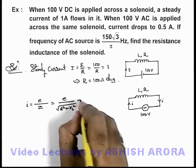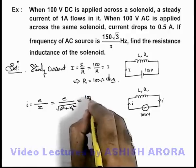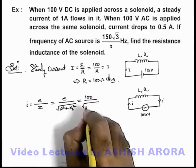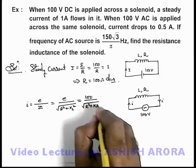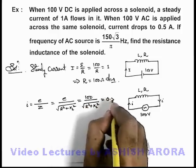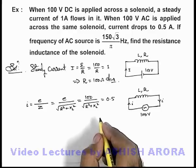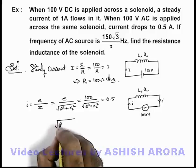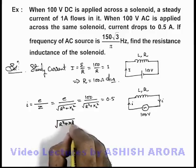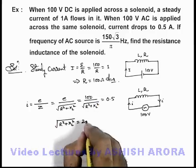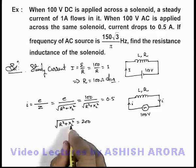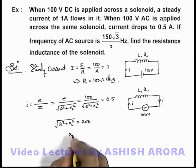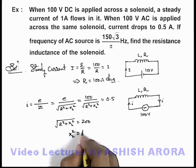And here the value of EMF is 100, so this 100/√(R² + XL²), its value should be 0.5 ampere. So in this situation see what we are getting: the value of √(R² + XL²) is equal to, this will be 200.